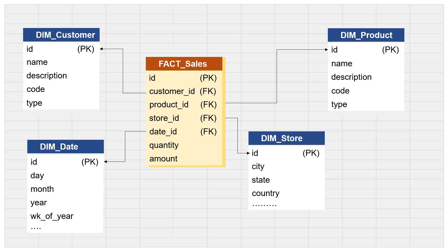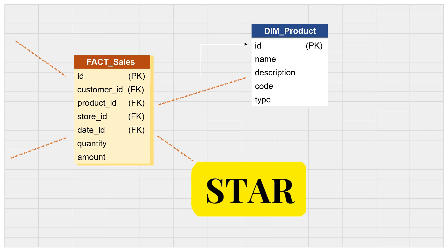Now let's look at some tables to build more understanding. Look at the fact sales table first — it is designed to provide important quantitative information for sales records. We are also keeping some reference keys, which are needed to provide additional attributes. We can use the quantitative columns to calculate required information. For example, to get total sales for a particular product for a given date range, we use the fact and dimension tables together.